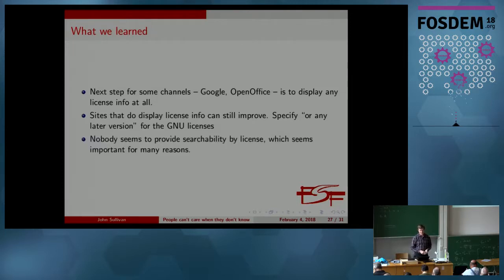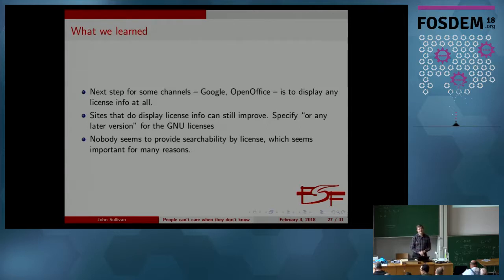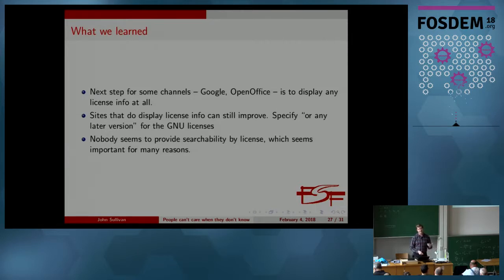And nobody seems to provide searchability by license, which I think is important for many reasons. When we're talking about general public users, it's more important to provide a way to search for software that is free, rather than by any particular license. But when it comes to commercial or corporate uses, it seems pretty important to get these sites to provide searchability — even by particular licenses — so you can see all the GPL-licensed extensions, GPLv3-licensed extensions, or all the Apache-licensed extensions.